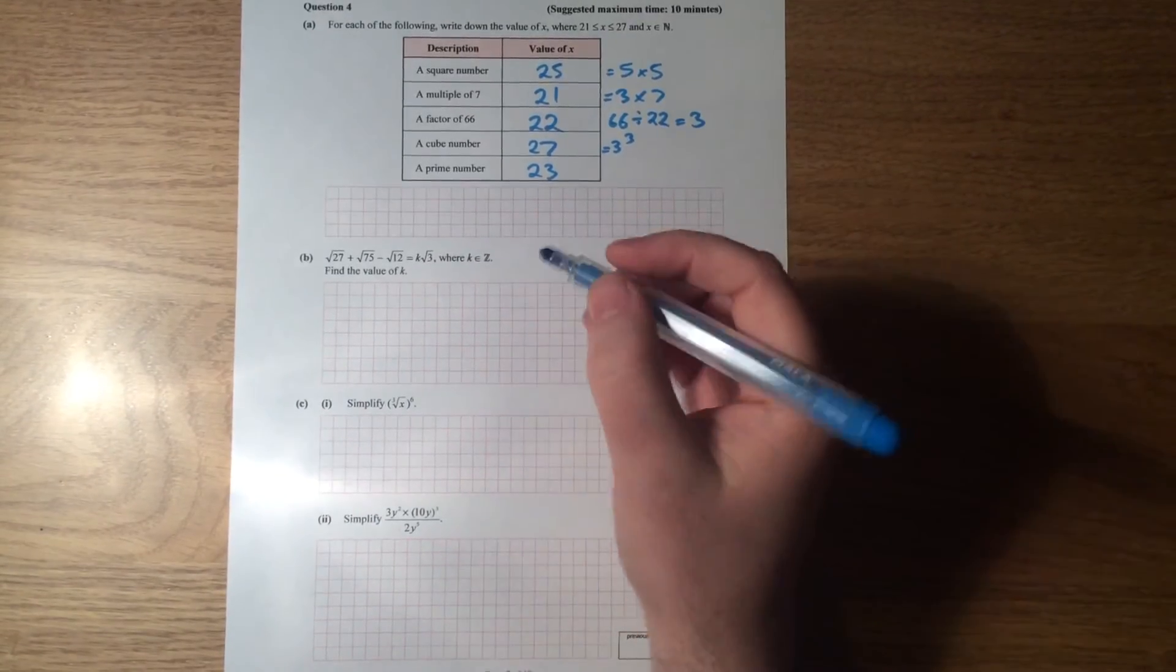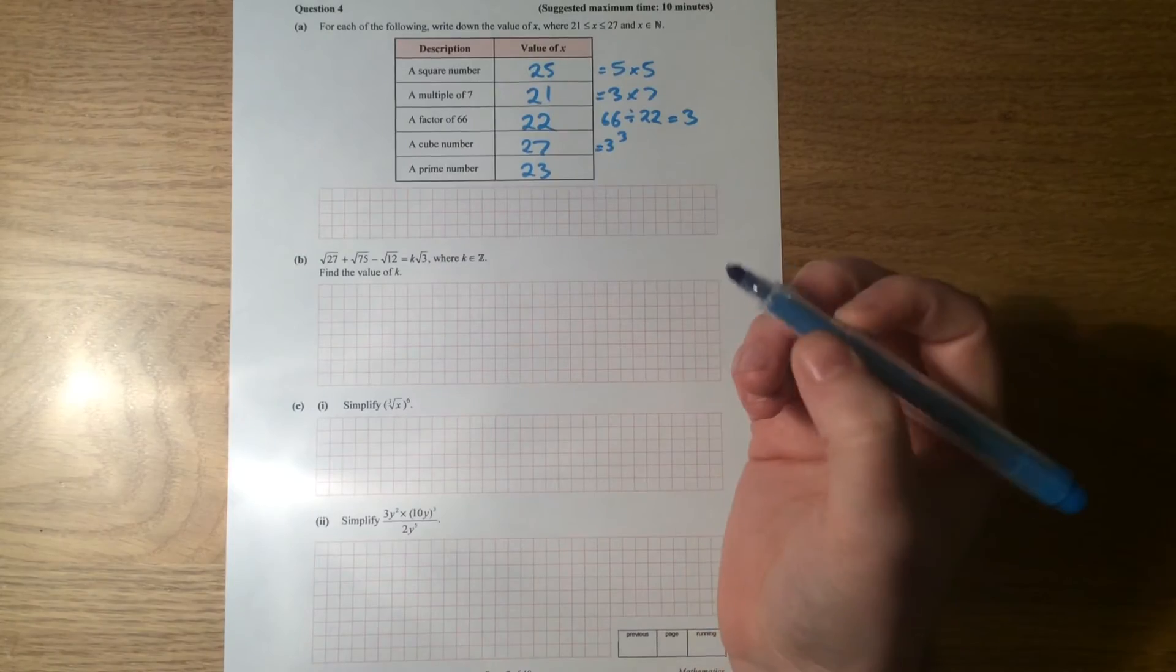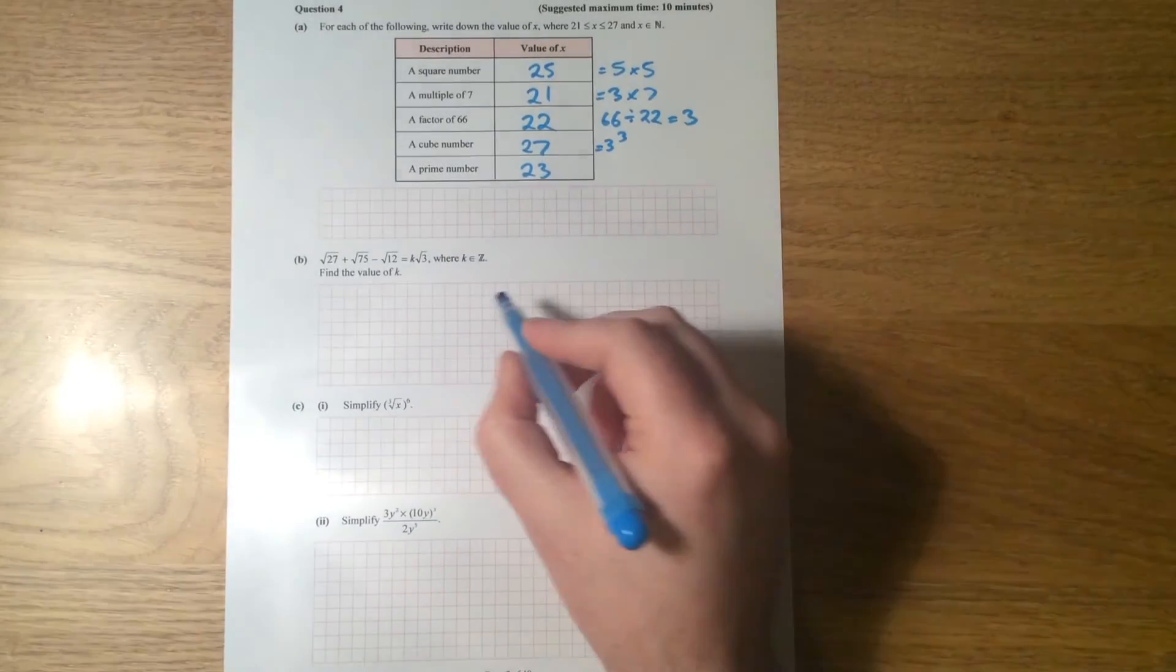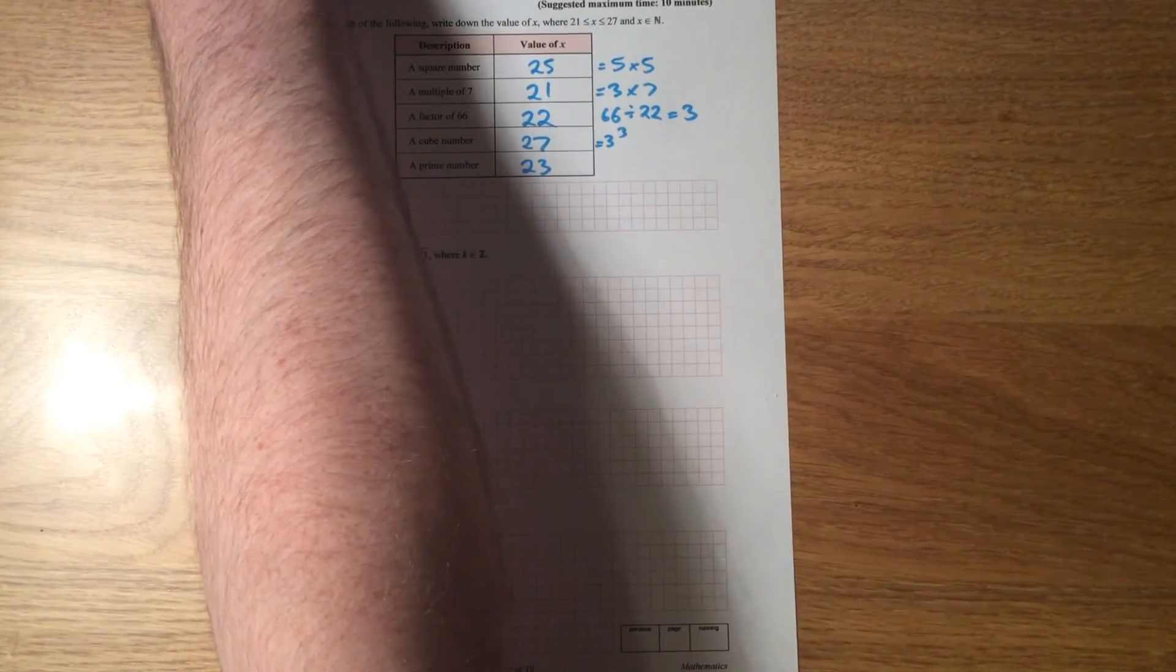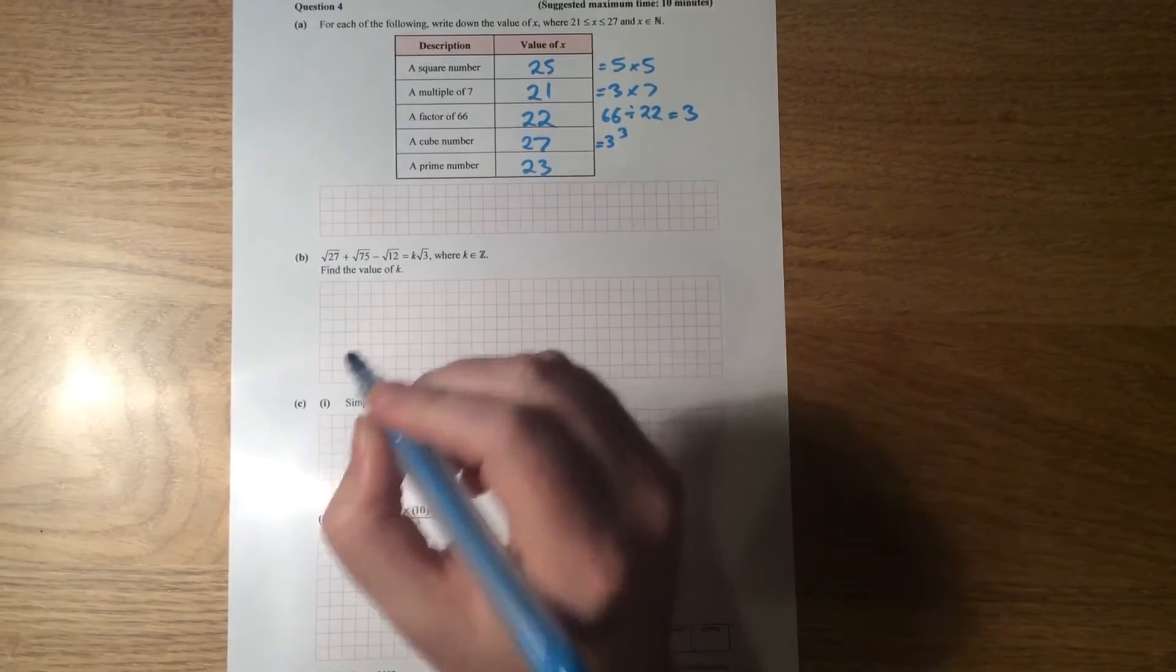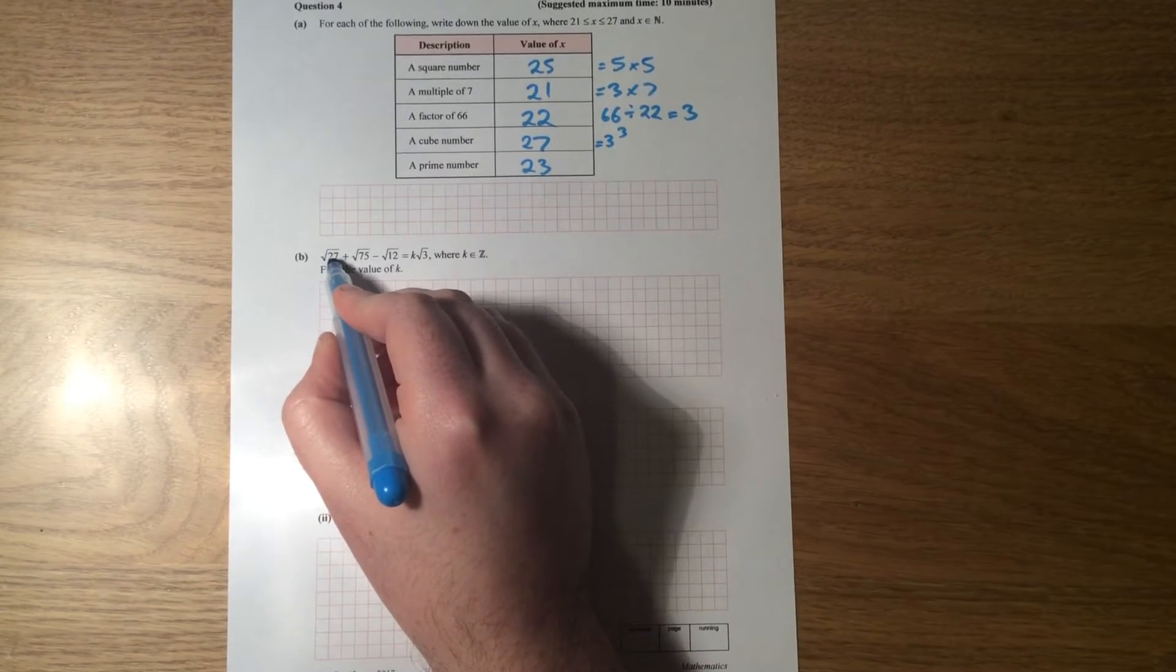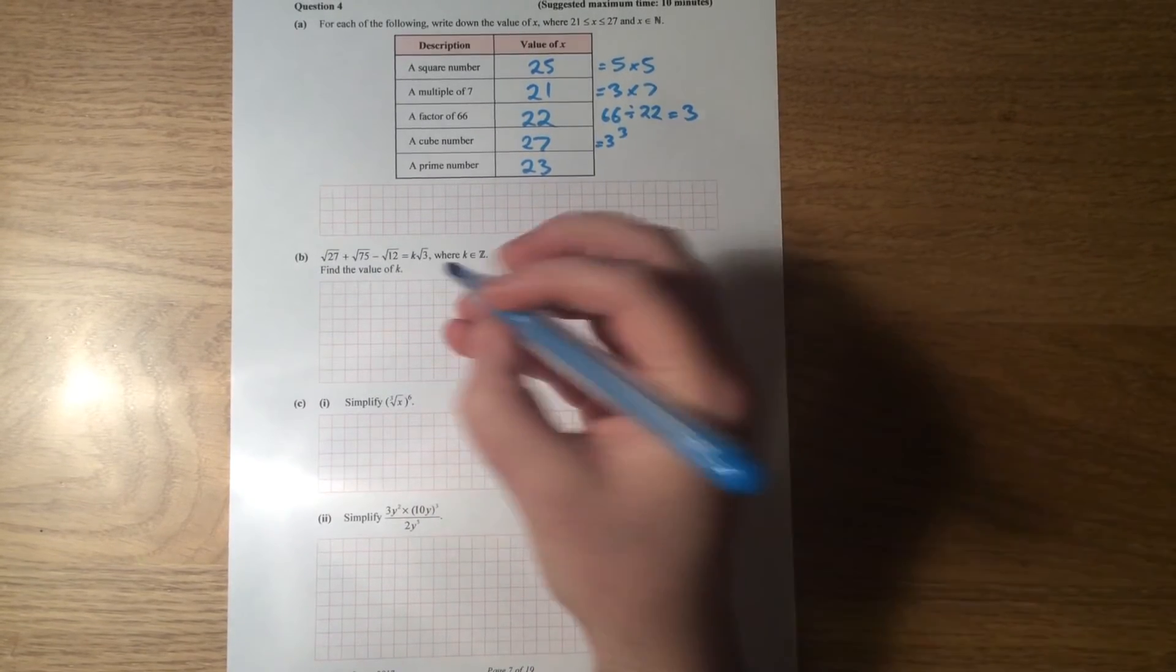Part B, the square root of 27 plus the square root of 75 minus the square root of 12 is equal to k times the square root of 3, where k is an element of the integers. Find the value of k. So let's have a look. Whenever you're simplifying a square root number, all right, I always try to factorize the 27 in such a way that I end up with a square number.